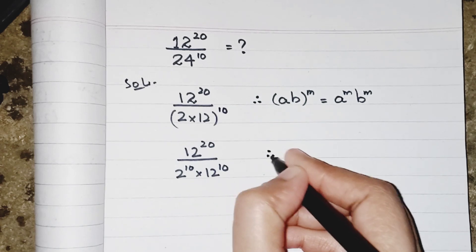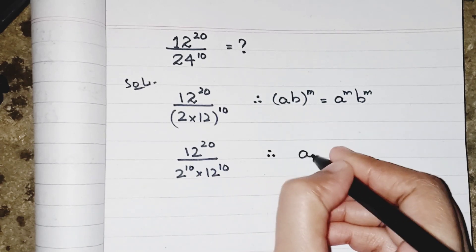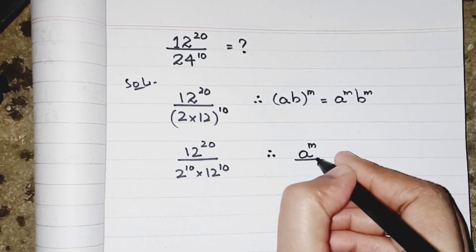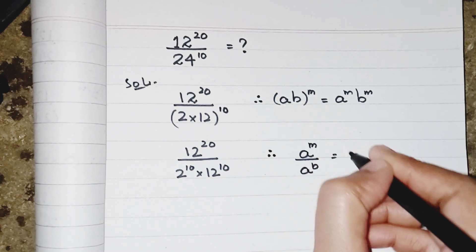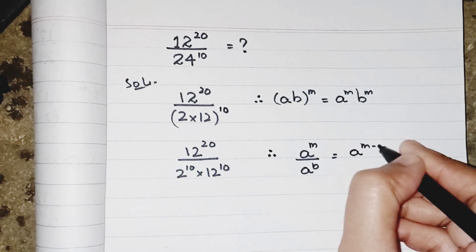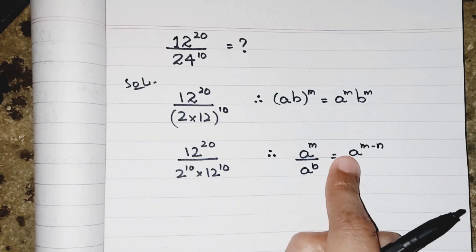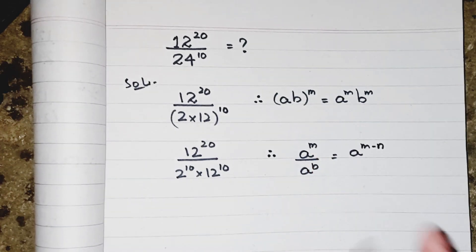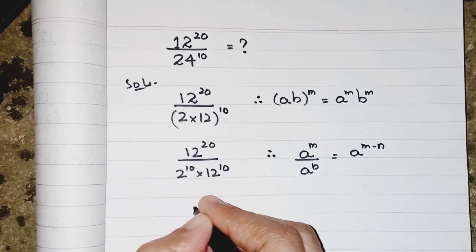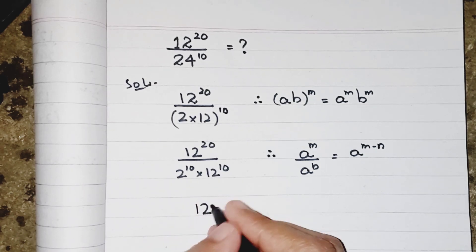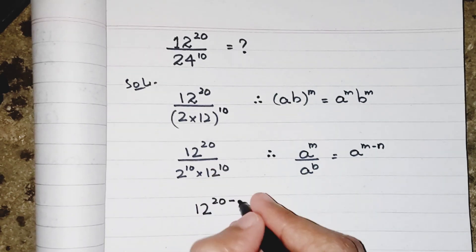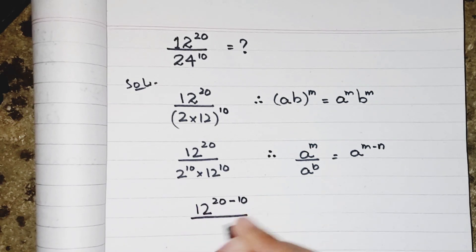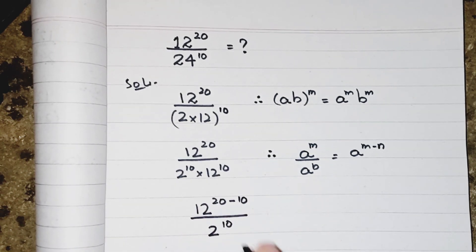So according to the law of exponent, when I have same bases but different powers, both of them should be written with a common base but the power should be added or subtracted accordingly. So I am writing 12 power 20 and this denominator 10 upon 2 power 10.